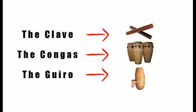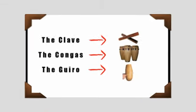Now I would like to introduce three percussion instruments that will help us identify the downbeat on each bar of music: the clave, the congas, and the guiro. Learning to identify the sounds and patterns of these particular instruments within a Salsa song will definitely help us find the downbeat on every bar of music.